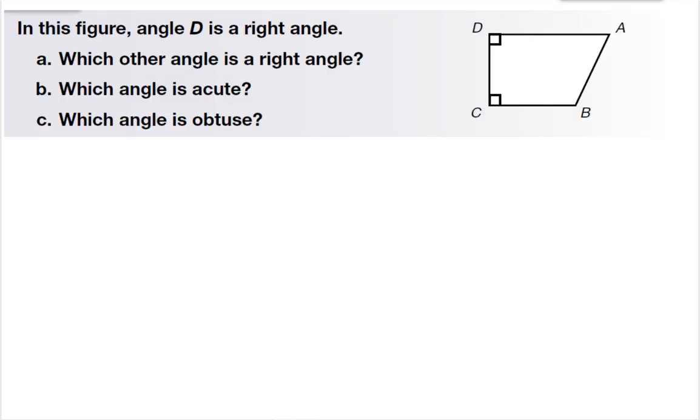This next question asks, in this figure, angle D is a right angle. We know that because it's got this little square. Which other angle is a right angle? Well, we can see that angle C is a right angle, because it also has that little square.